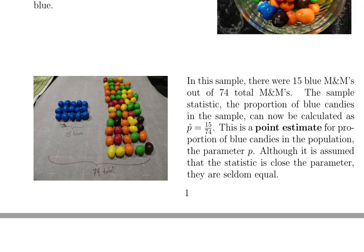In this sample there were 15 blues and a total of 74 M&Ms altogether, so p hat is going to be 15 over 74.